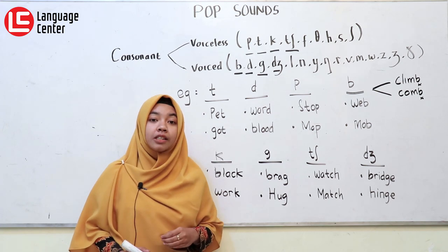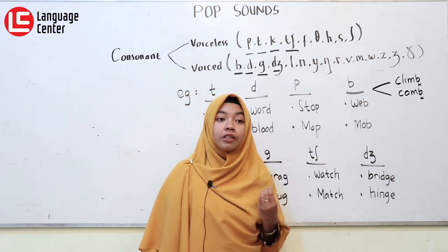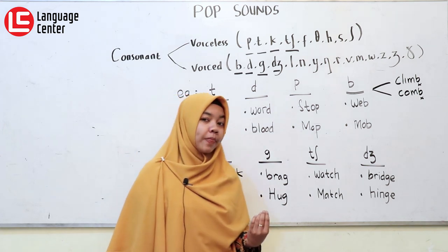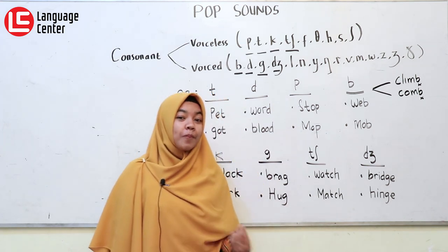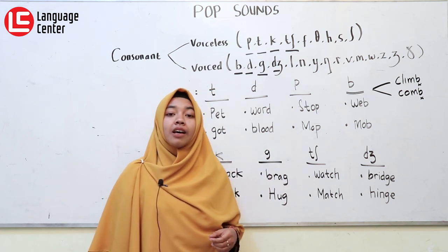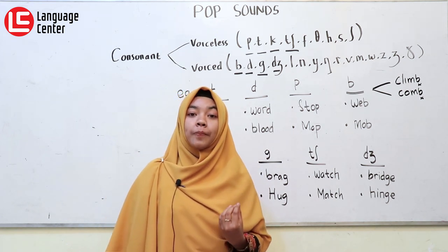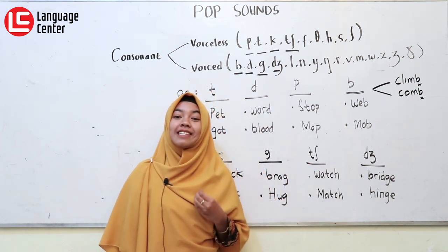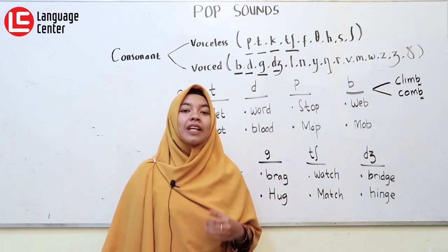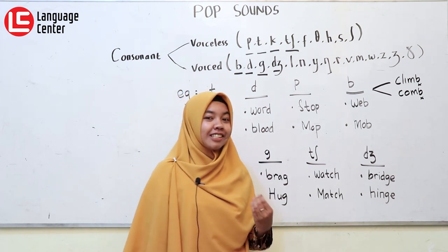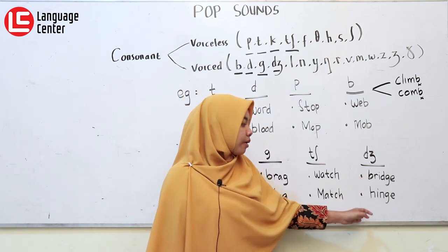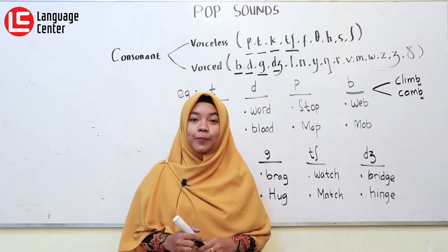Ada suara CH — ini bacanya adalah 'ch'. Contohnya 'watch', 'watch'. And then 'match', 'match'. The last, we have the sound J — atau kita biasa menyebutnya 'jeh'. In English, we pronounce it like 'j' — it's not like bahasa Indonesia. For the example, it's like 'bridge', 'bridge'. Kemudian 'hinge', 'hinge'.